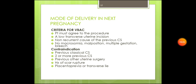Regarding delivery in the next pregnancy, what are the criteria for vaginal birth after cesarean section? The patient must agree to the procedure, there must be a low transverse uterine incision, a non-recurrent cause of the previous C-section, no macrosomia, no malposition, no multiple gestation, and no breech. Contraindications include previous classical C-section, two or more previous C-sections, previous other uterine surgery, history of scar rupture, and placenta previa or transverse lie.